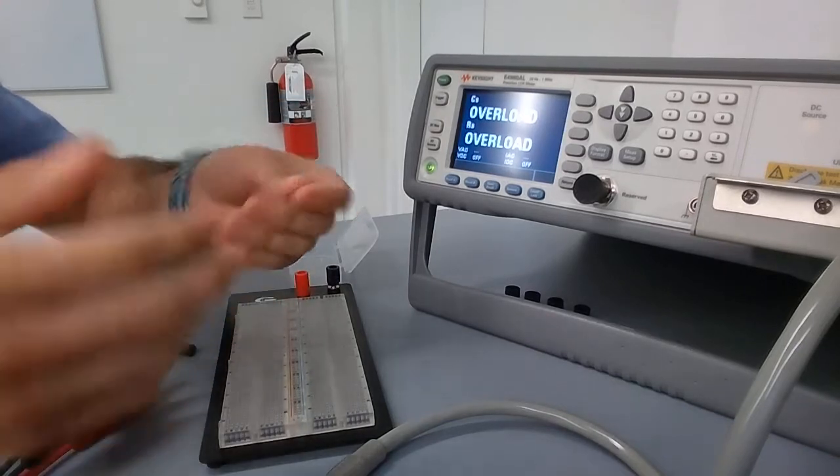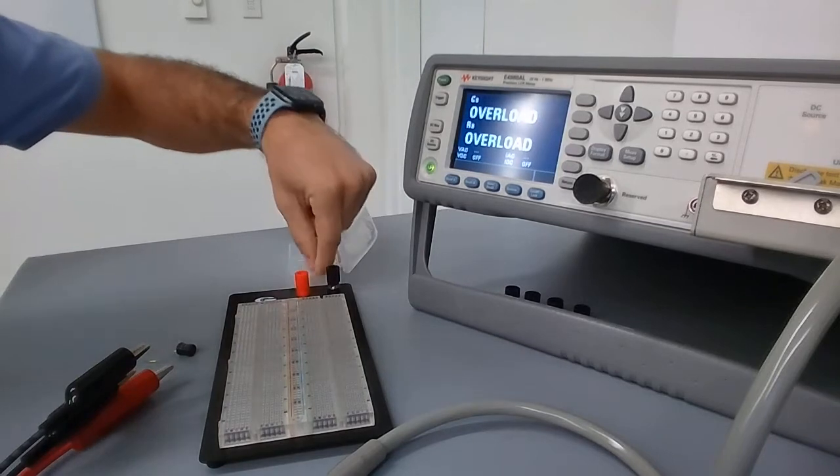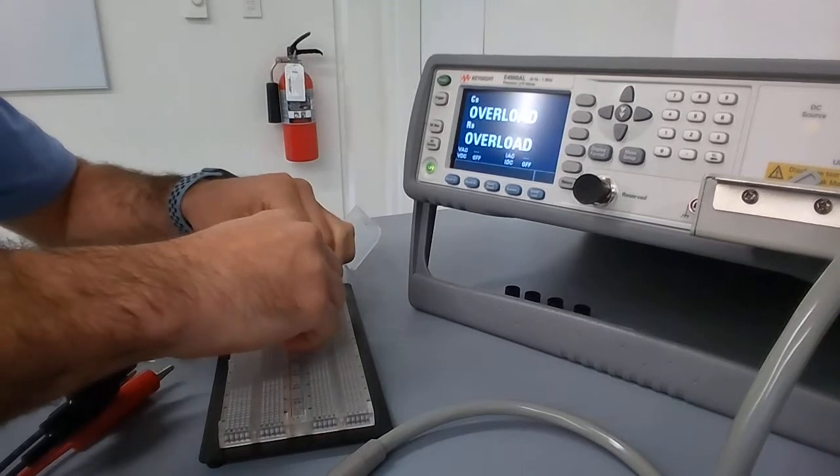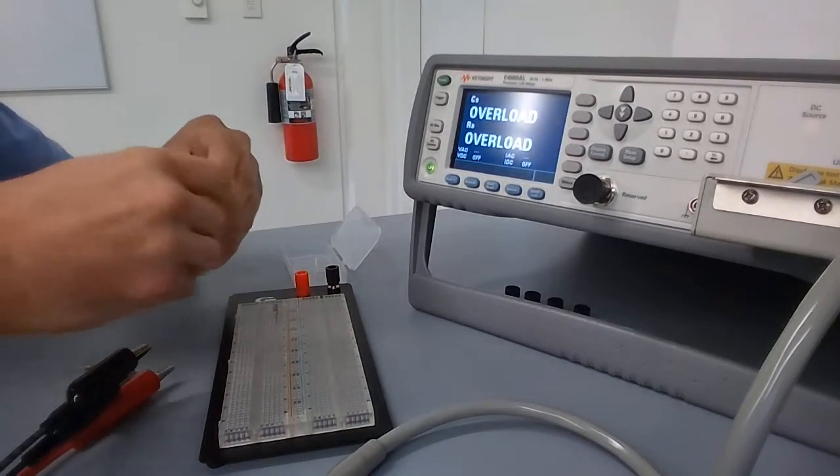We'll construct a simple circuit here utilizing some known values, but in this case you might not know the values. You might just want to know what the entire impedance is. So I'm gonna connect this 100 ohm resistor and then place my inductor.